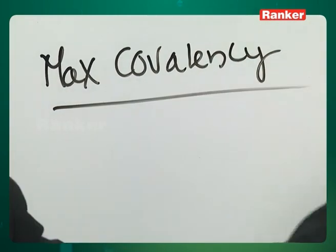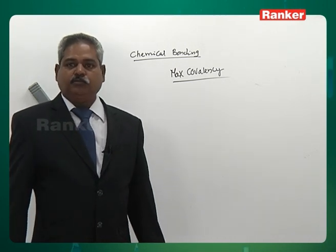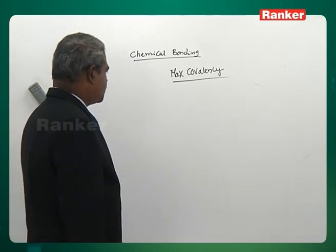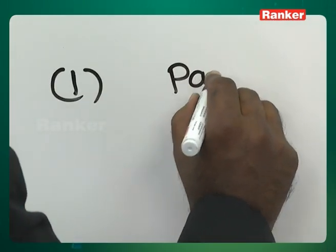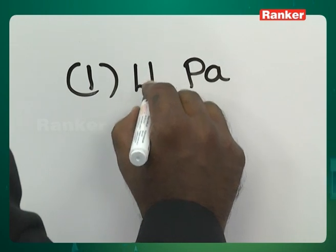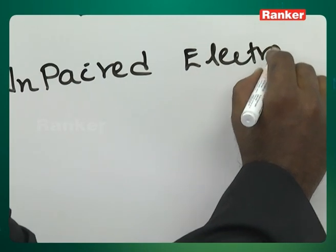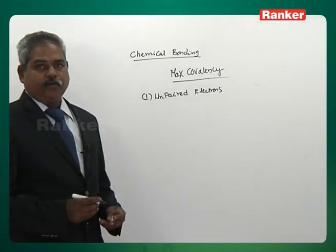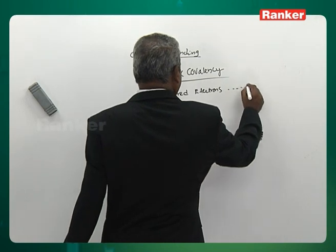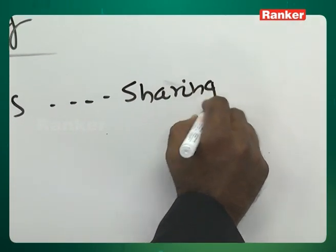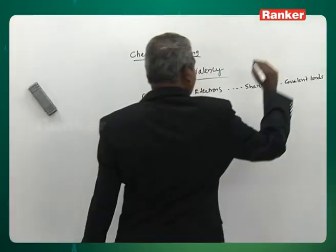How to find maximum covalency? First: unpaired electrons in the electronic configuration are used in sharing, and covalent bonds are formed. Second: paired electrons are excited if possible (when vacant orbitals are available) to form more covalent bonds. If excitation is not possible, the pair is donated as a dative bond — but only one pair is donated.